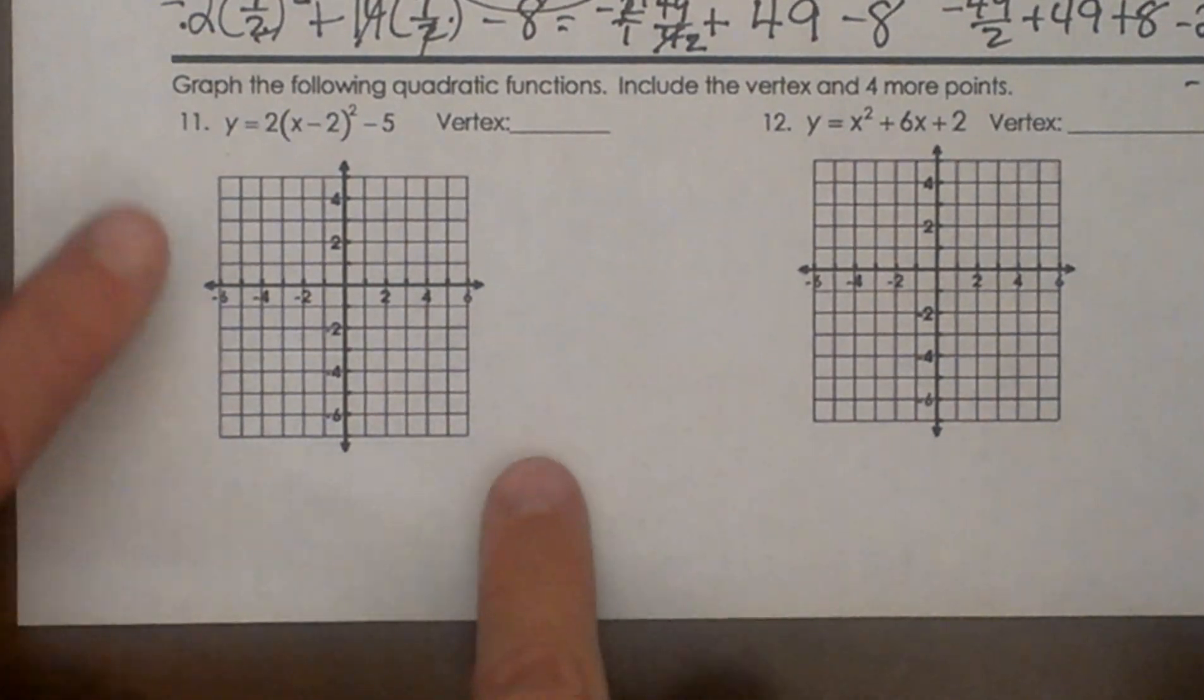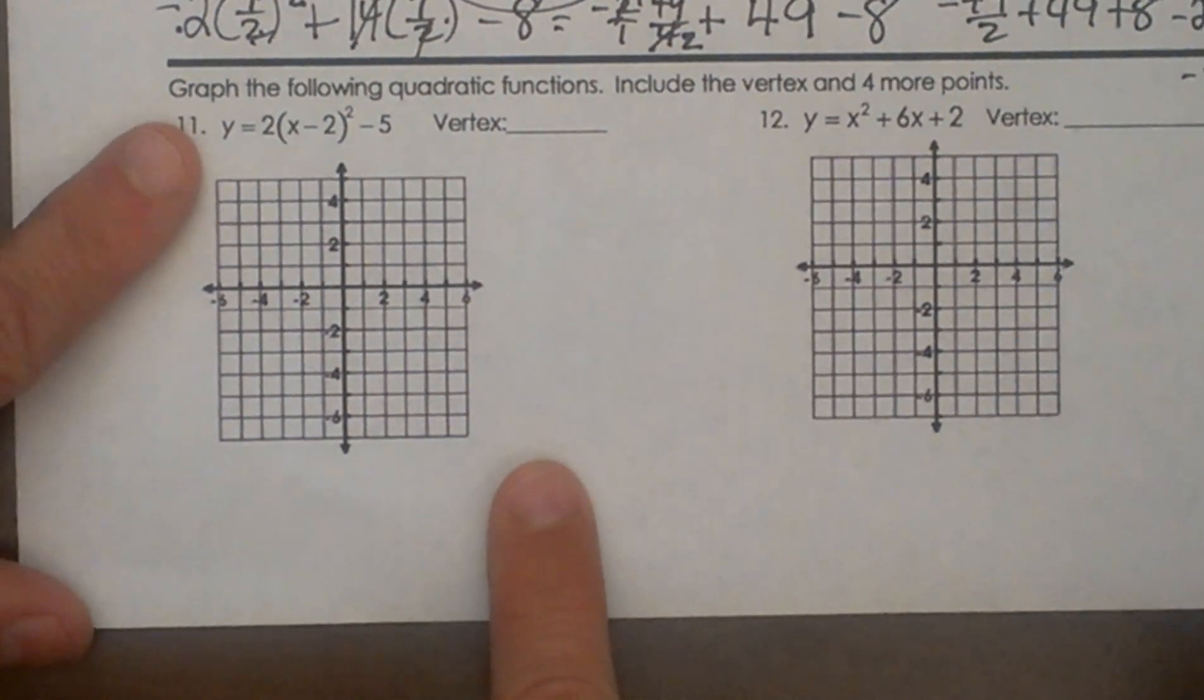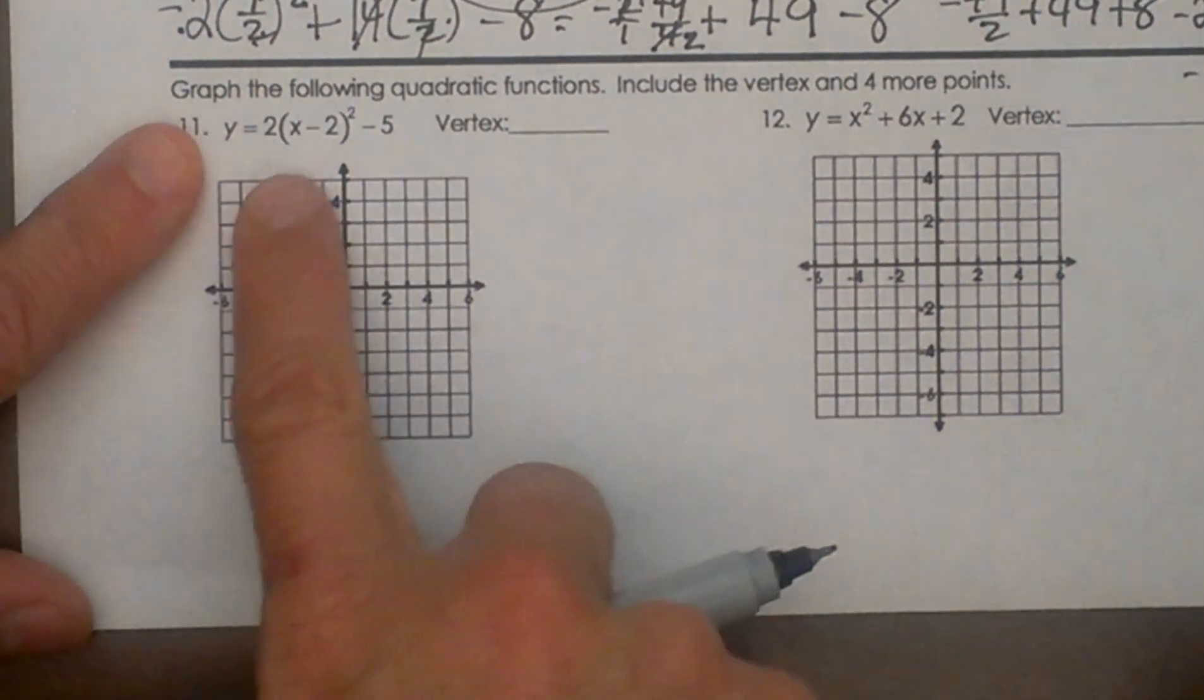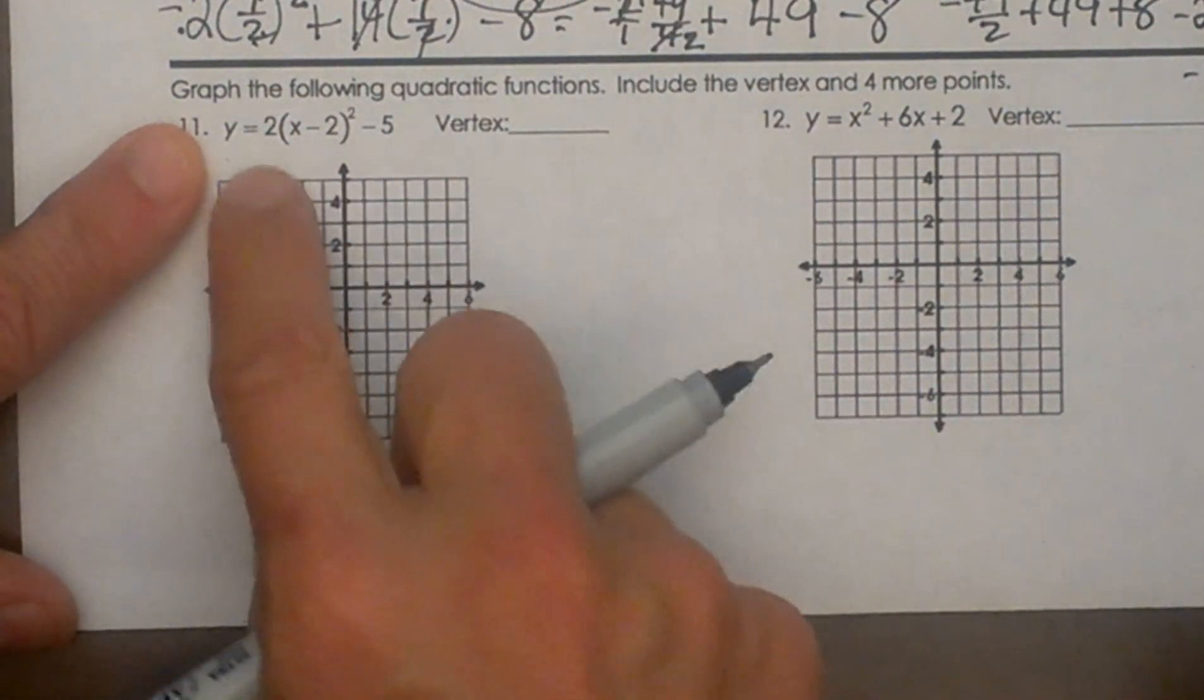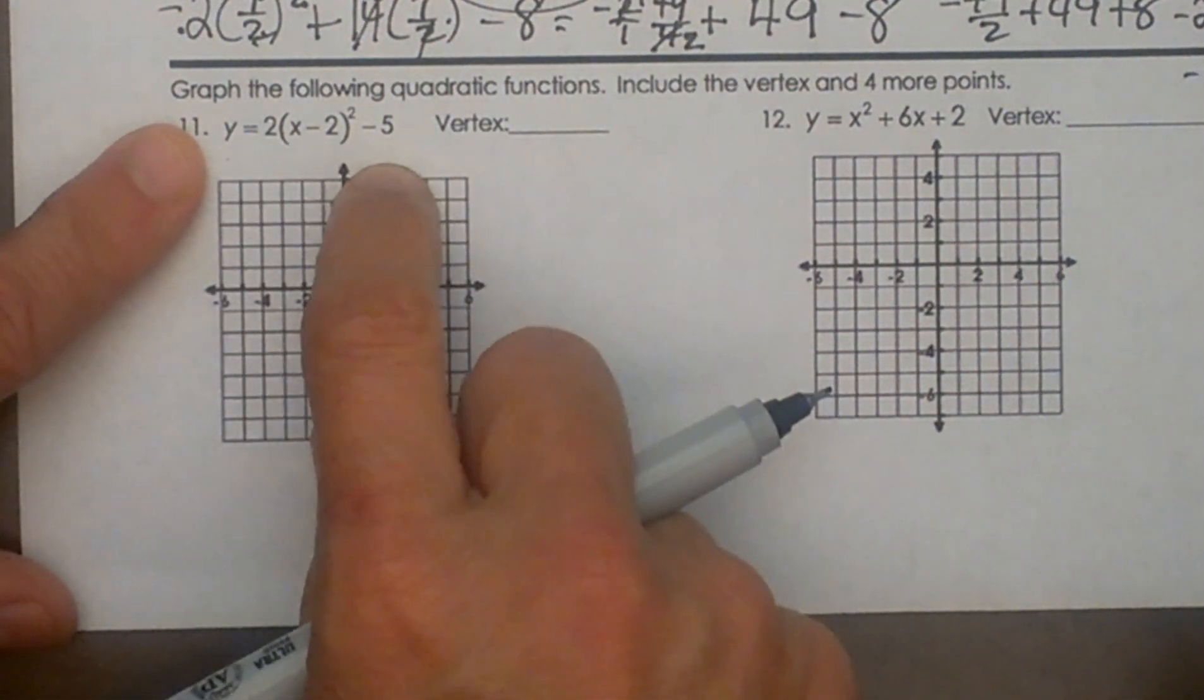Let's first start with this one. What we want to do first is identify the vertex which is the change of direction on a parabola. Well this is in vertex form so it's very easy.